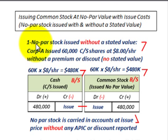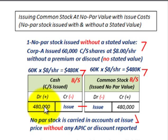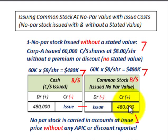Looking at our first case here where we issue no par stock without a stated value. Corporation A issued 60,000 shares of common stock at an issue price of $8 per share — without a premium or a discount. To record this, you take 60,000 shares times $8 per share, which equals $480,000. You debit cash for $480,000, and then moving over to our equity account on the balance sheet, you credit common stock for $480,000.